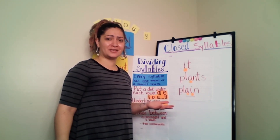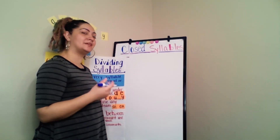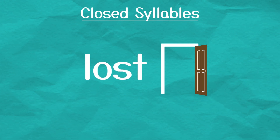Get your paper and your writing utensil ready because we're going to practice some words together. Let's write our first word: L-O-S-T. Once you have your word written, go ahead and put a dot under each vowel. Remember, the vowels are A, E, I, O, U, and sometimes Y. Did you only put one dot? I hope so, because there's only one vowel. And if there's only one vowel, there's only one vowel sound, which means there's only one syllable in this word.